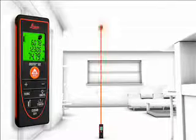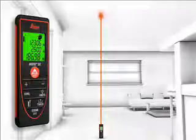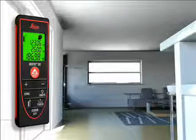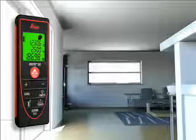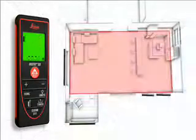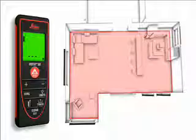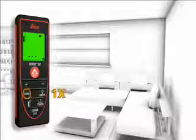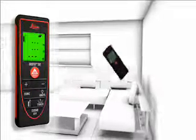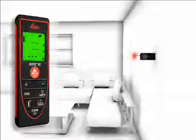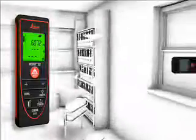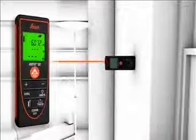Distances and areas can be easily added or subtracted at the touch of a button. This is very useful, for example, if the area of a room should be measured which goes around a corner, or if the total area of different rooms has to be identified.